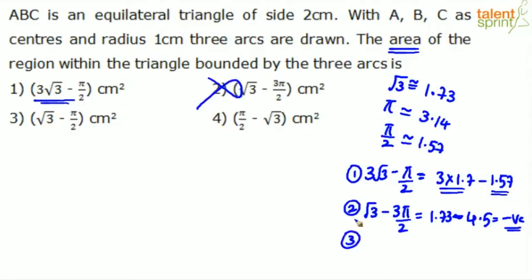Look at option 3: √3 - π/2. √3 minus π/2 is 1.73 minus 1.57. This is possible, a positive answer. Hence, possible.